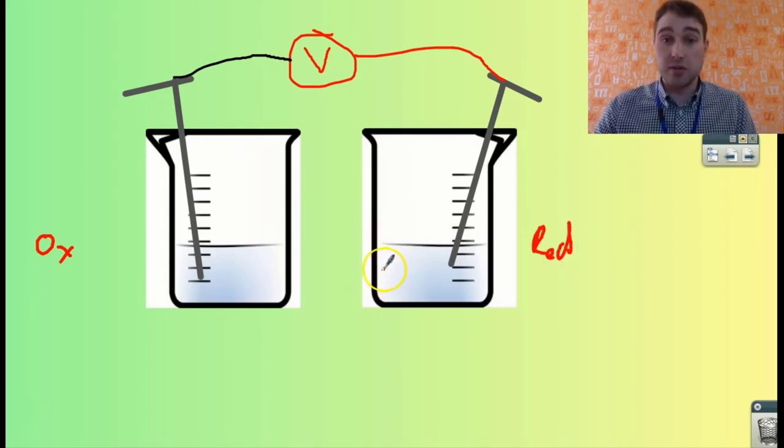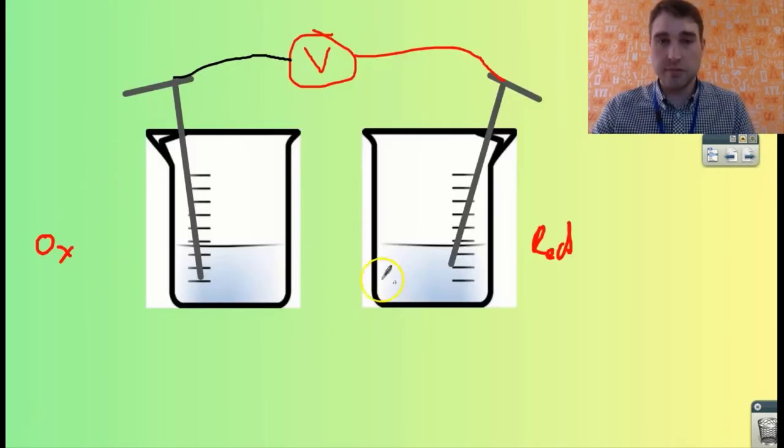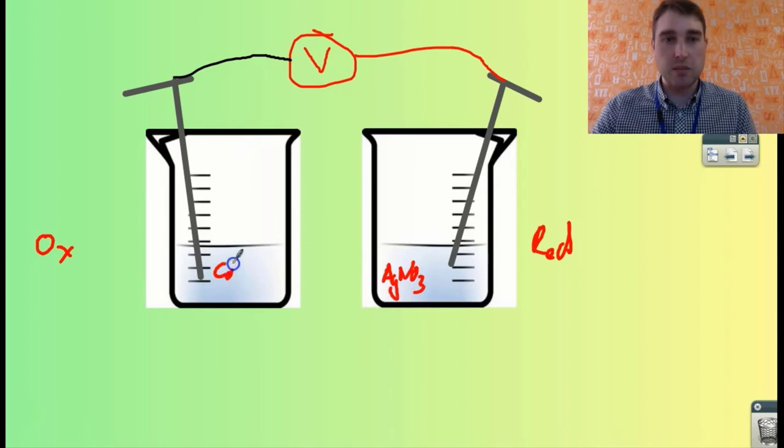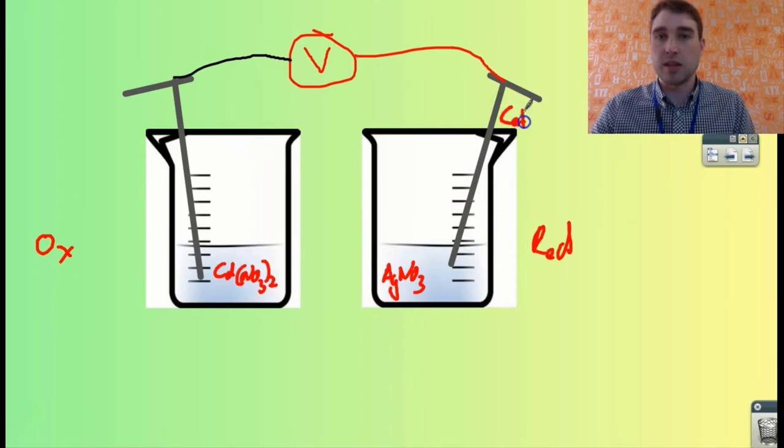The silver ions are reduced. Looking back at our information, silver nitrate is our solution down here, so our electrolyte is AgNO3, and on the other side we have cadmium nitrate, Cd(NO3)2. Now, silver is being reduced, so we know the site of reduction is the cathode - this is our cathode.